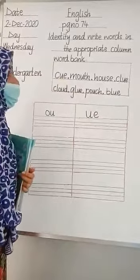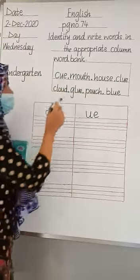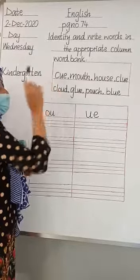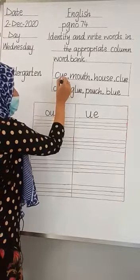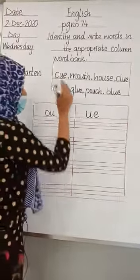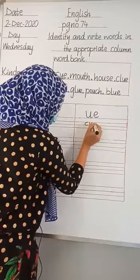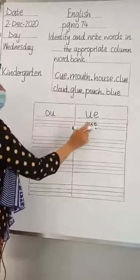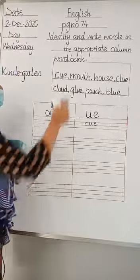So we have to identify the words according to their sound. The first word is 'cue', C-U-E. Look at the word 'cue'. The word 'cue' has a U sound. So we have to write the word 'cue' in the column of U sound because it has a U ending sound.